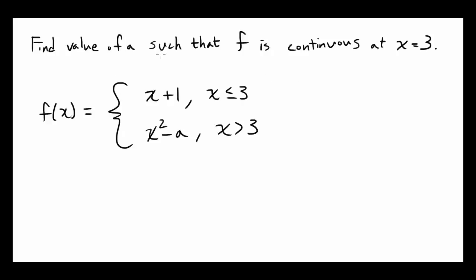Let's find the value of a such that our function f is continuous at x equals 3. This is f of x: f of x is x plus 1 for values less than or equal to 3, and f of x is x squared minus a for values more than 3.